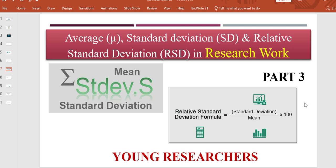Hey guys, in the previous video we discussed the basic terms used in statistical analysis — that is average, standard deviation, and relative standard deviation — along with their formulas. We already discussed a very simple example to show how these terms can be calculated and how the formulas can be applied to a simple data set.